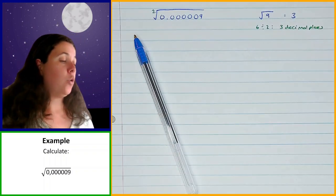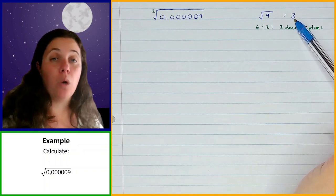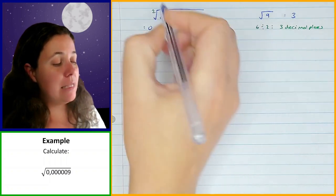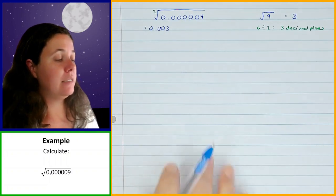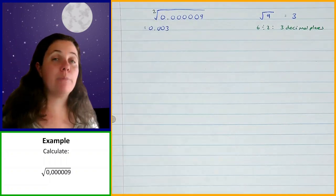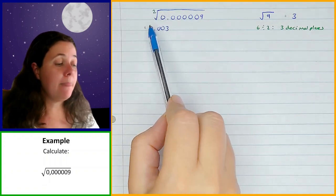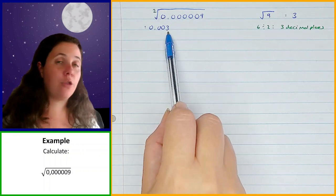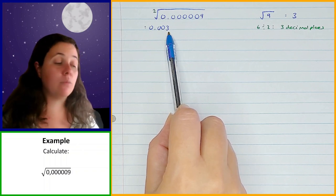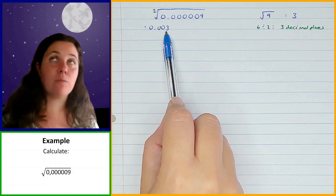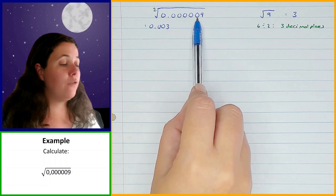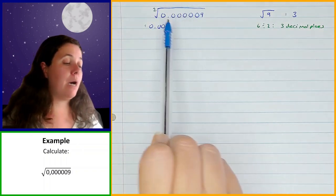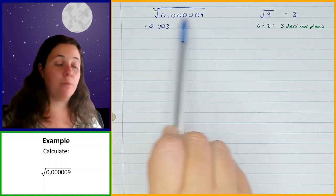We have 3 as our number, which is only 1 digit, but we need 3 decimal places. So I need 2 extra zeros: 0.003. As a check: if I square 0.003, I square the 3 to get 9, and I multiply 3 decimal places by 2 to get 6. That gives 0.000009, which is what we started with. So square rooting and squaring are inverses — we divide decimal places by 2 instead of multiplying.